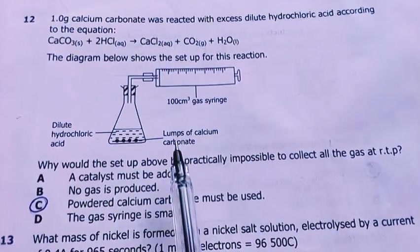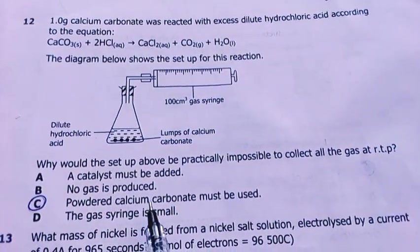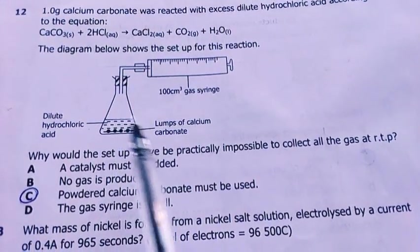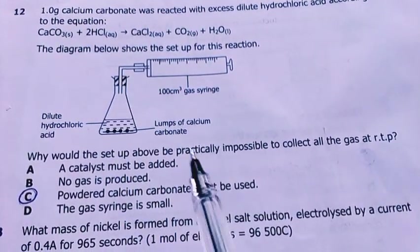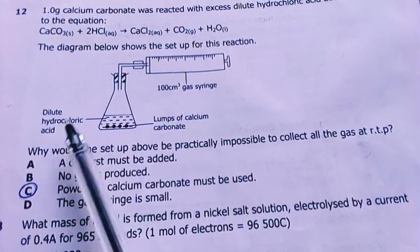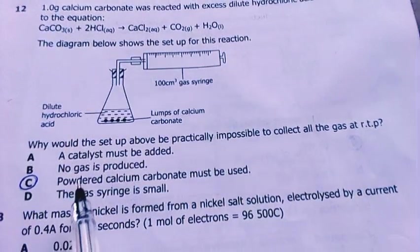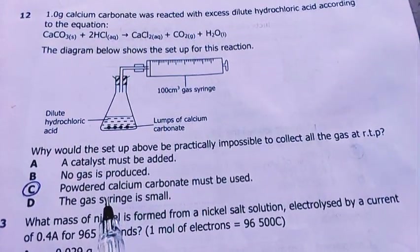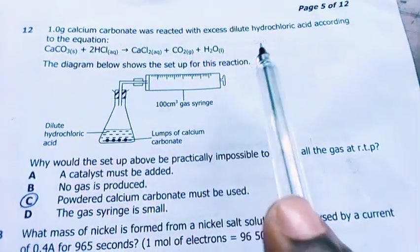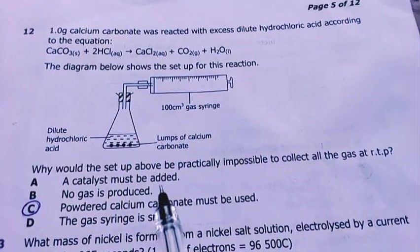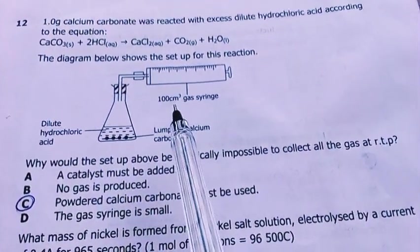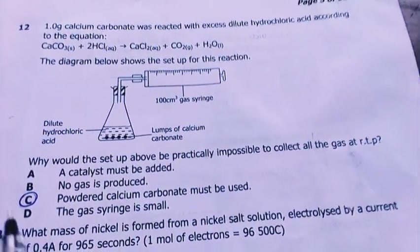You may not collect all the gases at RTP from the reaction because the reaction will not go to completion properly because you're using lumps. A catalyst must be added? No, you don't really need a catalyst for this reaction. It's simple: acid reacts with carbonates to produce a salt, CO2, and water. No gas is produced? No, that's not correct. The gas syringe is small? Let me do some calculations and check if the syringe might be too small. If the gas produced will be more than 100 cubic centimeters, then the syringe is small.